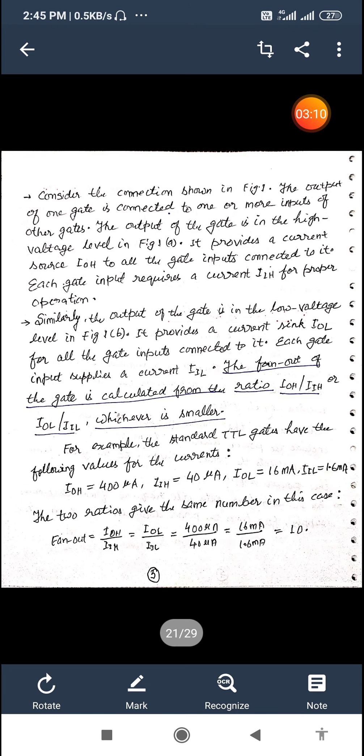Now we can see in this figure. So the fan out of the gate is calculated from the ratio IOH upon IIH output upon input for high or low, IOL upon IIL whichever is smaller.